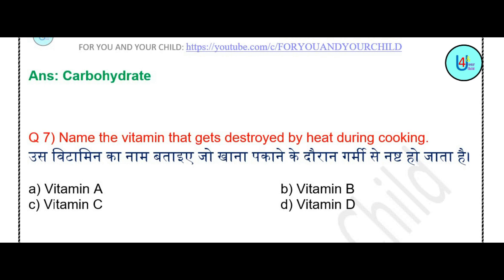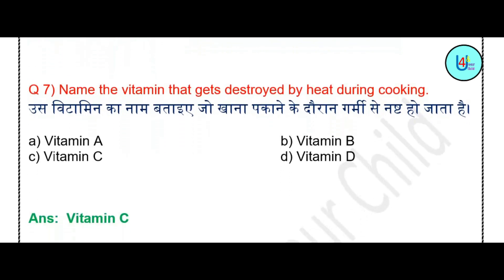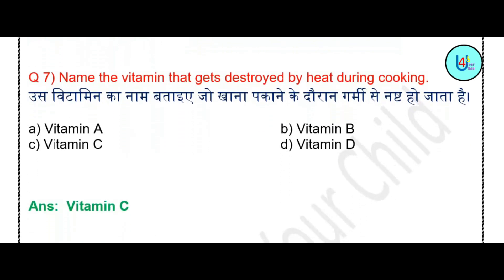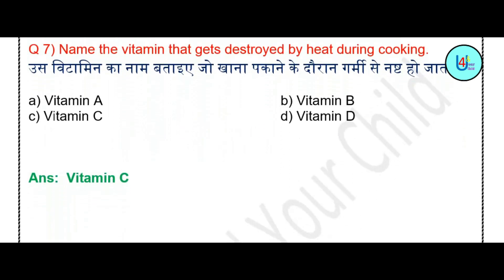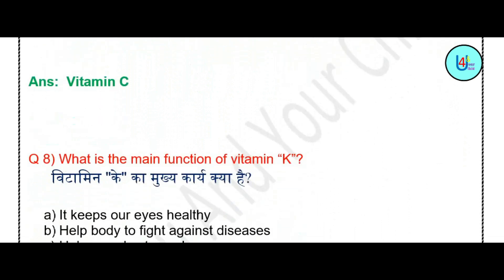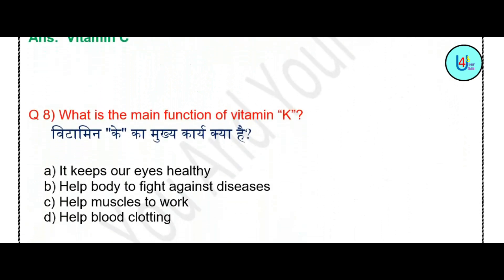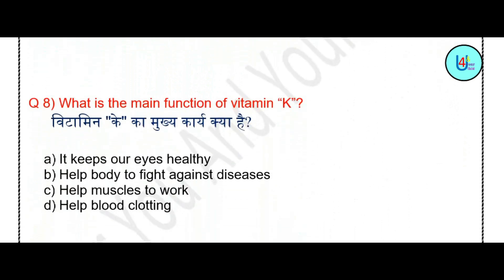Question number 7: Name the vitamin that gets destroyed by heat during cooking — Vitamin A, Vitamin B, Vitamin C, or Vitamin D? The correct answer is Vitamin C.